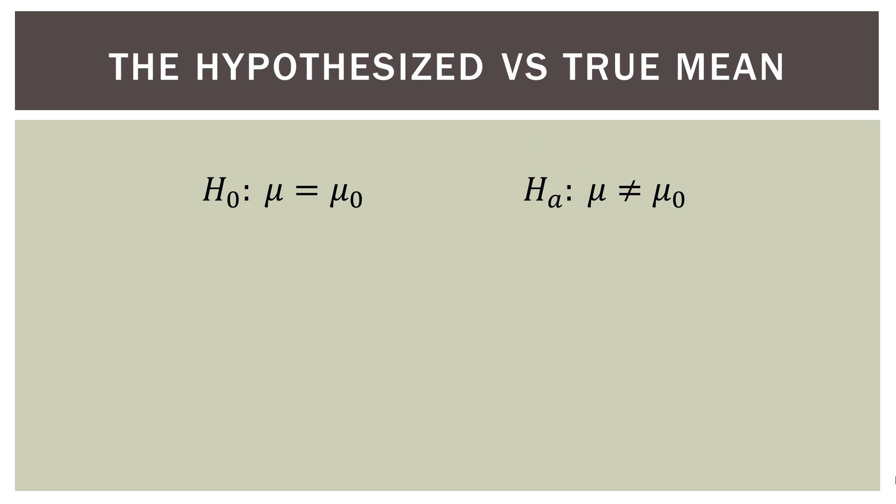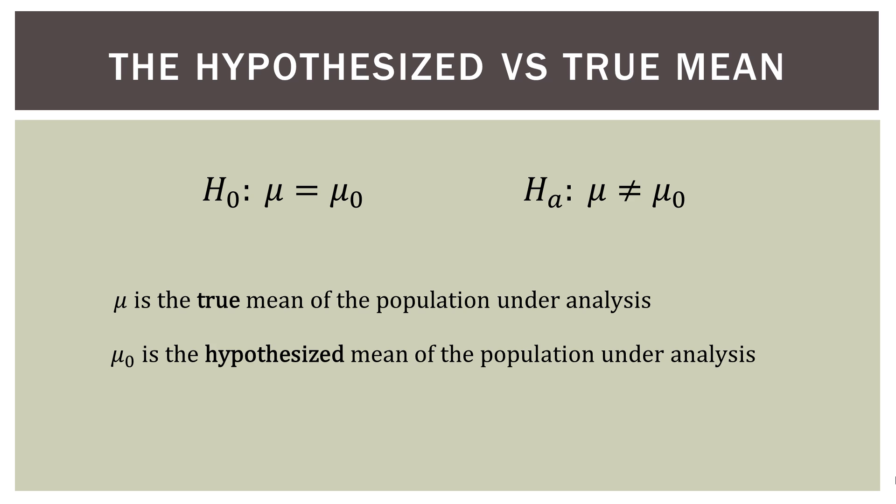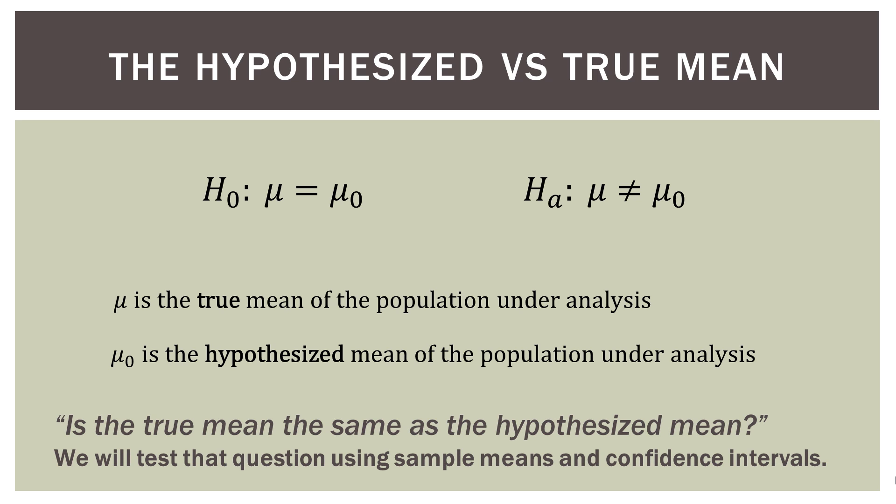So remember, what we're talking about here is the hypothesized versus the true mean. So mu is the true mean of the population under analysis. So if we're analyzing a population, it actually has a real world true mean. Now mu sub zero is the hypothesized mean of the population under analysis. So we might have some guess or some previous study or something else we are testing it against. So we're testing two means: we're testing our data's mean, the actual population mean, versus some hypothesized value we think it is. So what we're asking here is, is the true mean the same as the hypothesized mean? Are they coming from the same distributions? Now we will test that question or this question using sample means, of course, and confidence intervals, which we'll call critical regions here in a minute.